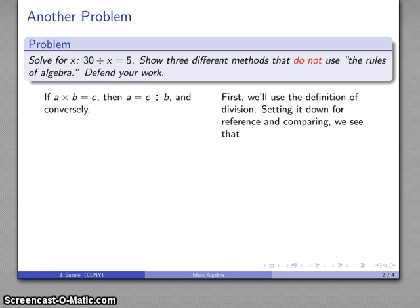There's our definition of division, and what we can do is compare what we have, 30 divided by x equals 5, to what our definition says. The conversely says that if I have either statement, I can go to the other one without comment or difficulty.